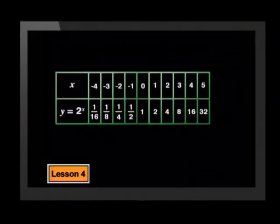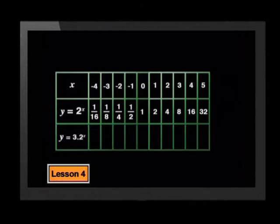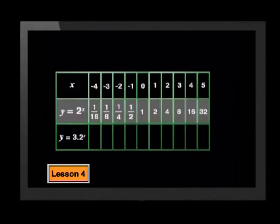Here is a table of values for the parent function y equals 2 to the power of x. Let's add another column to the table to work out the y values of the function y equals 3 times 2 to the power of x. We can take each y value for the parent function and multiply it by 3 to get the y value for the new function.